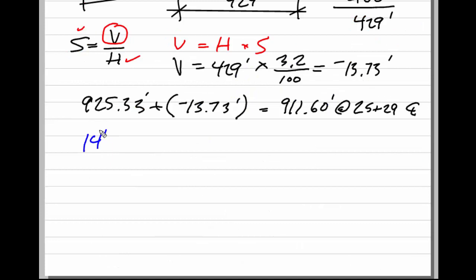14 feet of pavement width times the slope—in our case a 2% slope—is going to be 0.28 feet. Now I'll note that this is negative just as the previous one was negative. To apply that, I'm simply going to take my center line elevation at that station, 911.60, and I'm going to apply this 0.28 feet negative, so it's a net subtraction.